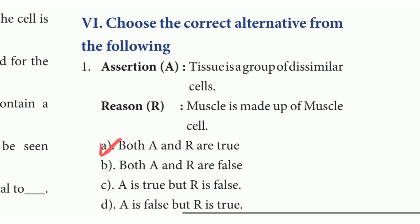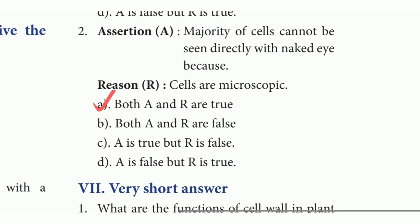Choose the correct alternative. First one — Assertion: tissue is a group of dissimilar cells. Reason: muscle is made up of muscle cells. The answer is option A — both A and R are true. Second one — Assertion: majority of cells cannot be seen directly with the naked eye. Reason: cells are microscopic. The answer is option A — both A and R are true.